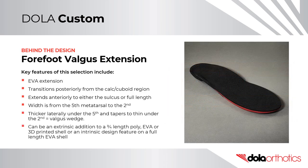Key features of a forefoot valgus extension include: it is constructed out of EVA and transitions posteriorly from the calc-cuboid region, extending anteriorly to either the sulcus or full length. Its width runs from the fifth metatarsal to the second, thicker laterally under the fifth and tapering to thin under the second, equalling a valgus wedge. It can be an extrinsic addition to a three-quarter length poly, EVA, or 3D printed shell, or an intrinsic design feature on a full-length EVA shell.